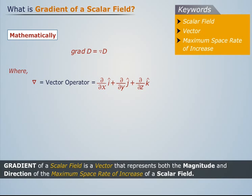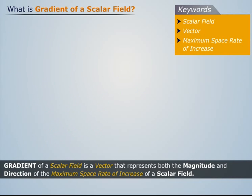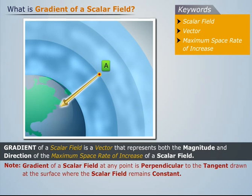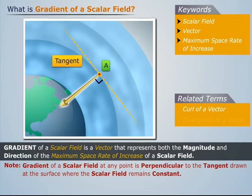It can also be expressed as. Note that gradient of a scalar field at any point is perpendicular to the tangent drawn at the surface where the scalar field remains constant.